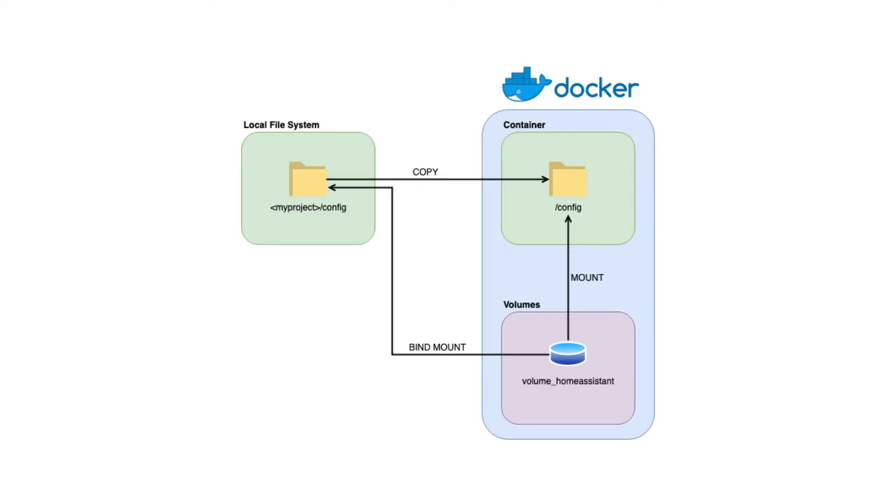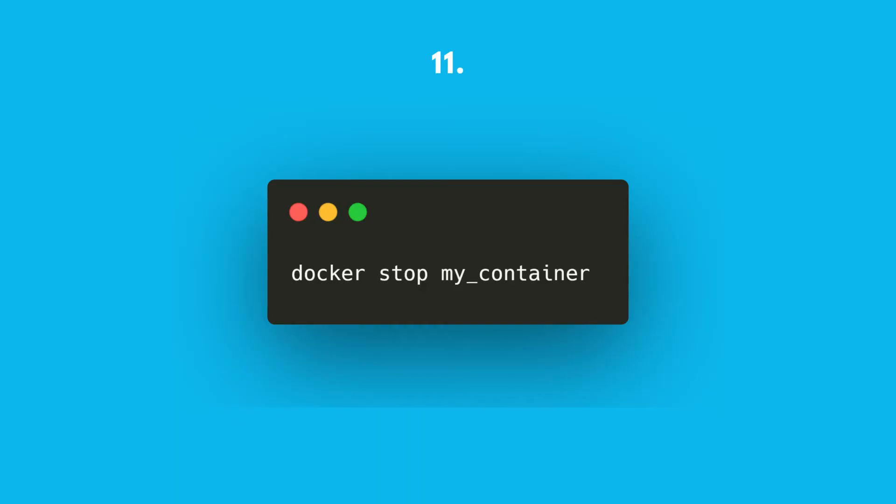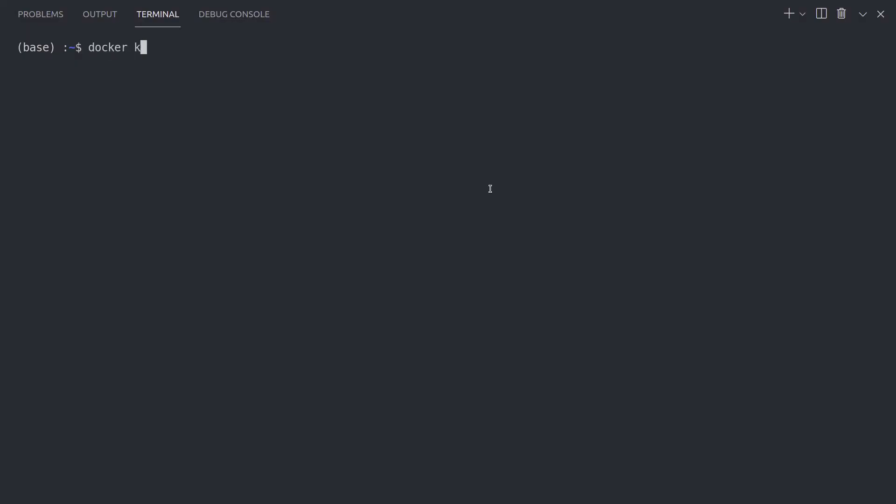Docker volume ls. This lists the volumes, which are the preferred mechanism for persisting data generated and used by Docker containers. Imagine you have a database in your container — you obviously want to persist the data, which is why you need volumes. Volumes are basically hard drives for your containers. Docker stop will simply stop one or more containers that you specify. A more direct way is to use docker kill, which does not attempt to shut down the process gracefully first — meaning it will ignore any warnings during shutdown, just like when you unplug your computer while it's turning off.